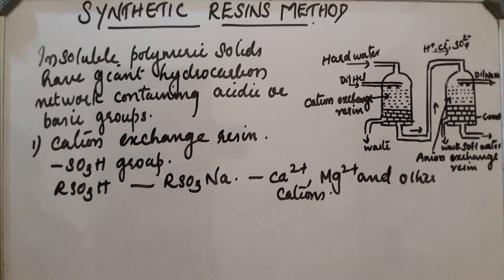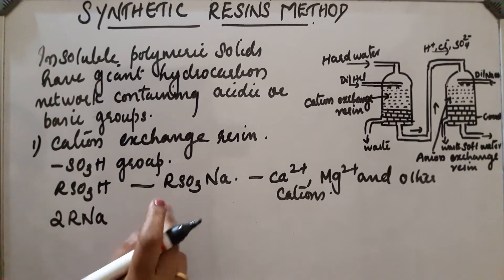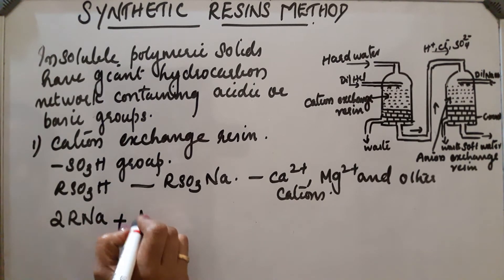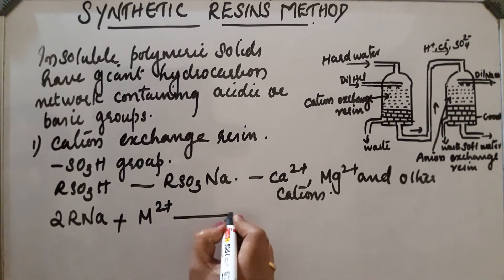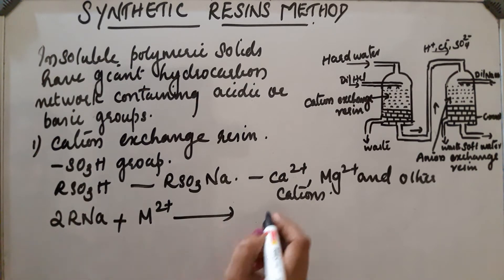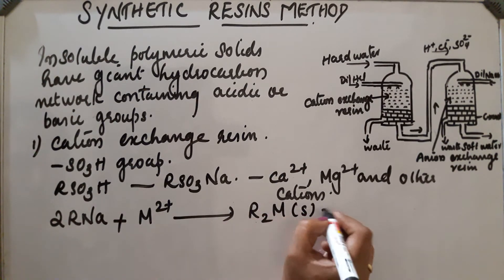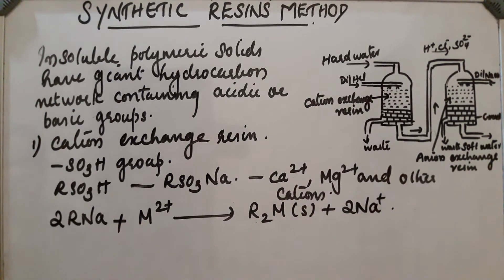The reaction is: 2RNa, on reaction with the metal ions Ca2+ or Mg2+ present in hard water, gets converted into R2M + 2Na+. This is the reaction taking place in the cation exchange resin.